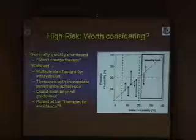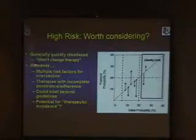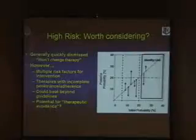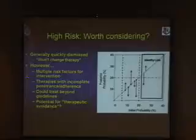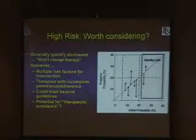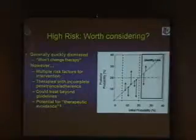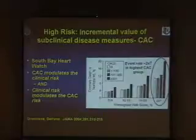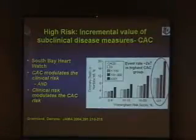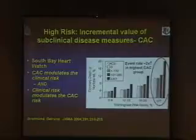How about high-risk patients? We tend to dismiss screening them because we think their therapy won't change. But this is a group in which risk factors are enriched, and we know that therapeutic penetrance and adherence is low in high-risk patients — giving us an opportunity to detect the highest-of-high-risk group to alter their treatments and adherence. It could also identify a group in whom we would treat beyond the guidelines, or perhaps in a patient with a negative test, downgrade their therapeutic intensity. Within the South Bay data, very high clinical risk plus high calcium scores incrementally predicted risk — subclinical atherosclerosis modulated clinical risk, and clinical risk modulated the risk of atherosclerosis present.